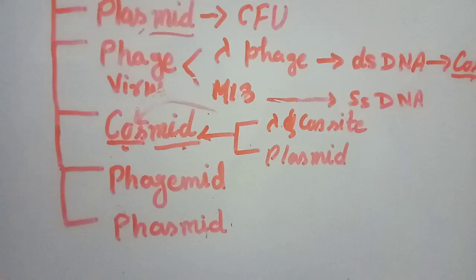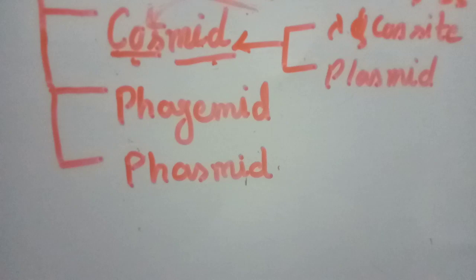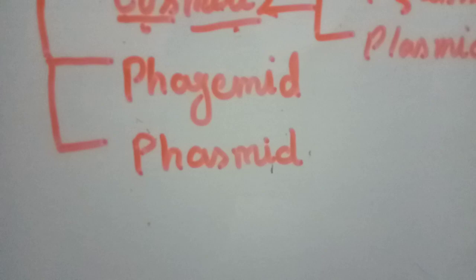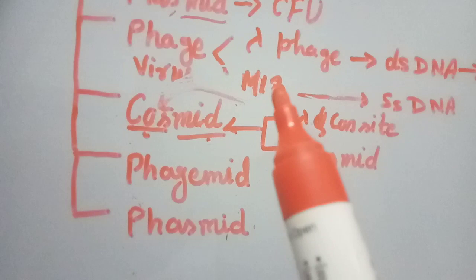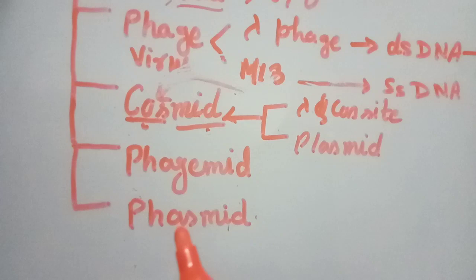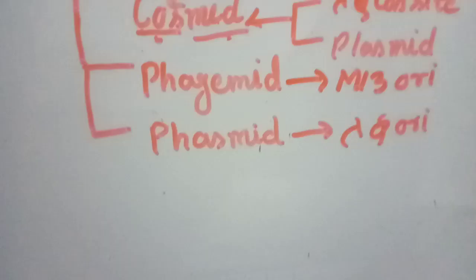Another further advancement is based on viruses: phagemid and phasmid. Phagemid is coming from single-stranded DNA, M13, while phasmid is based on the lambda phage double-stranded DNA ori.